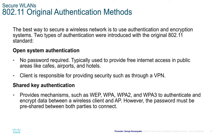802.11 original authentication methods. The best way to secure a wireless network is to use authentication and encryption systems. Two types of authentications were introduced with the original 802.11 standards: open system authentication and shared key authentication. In open system authentication, no password is required — typically used to provide free internet access in public areas such as cafes, airports, and hotels.